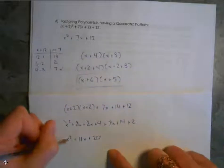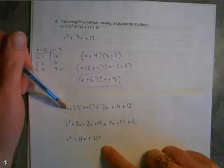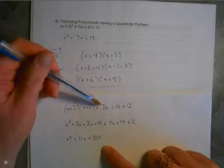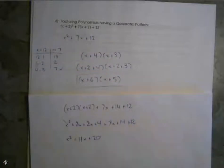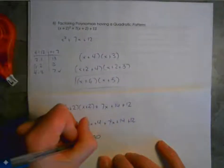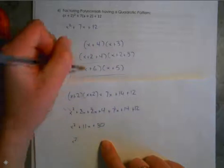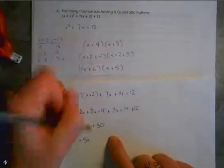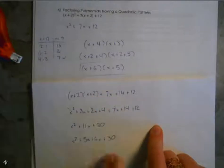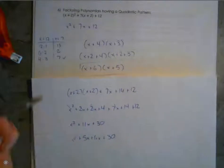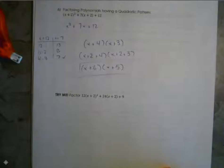Now check by multiplying out x plus 6 times x plus 5: x times x is x squared; x times 5 is 5x; x times 6 is 6x; and 6 times 5 is 30. Combining: x squared plus 11x plus 30. Yes, these match — so I've factored this quadratic pattern polynomial correctly. A really complicated check, and hopefully you won't have to do all of that on a test.